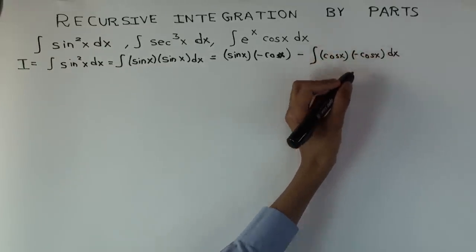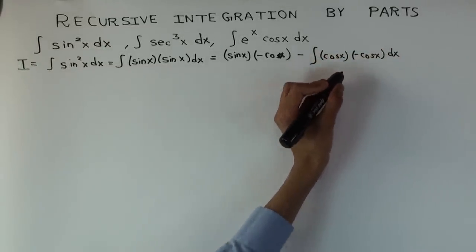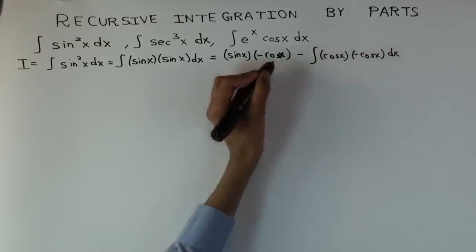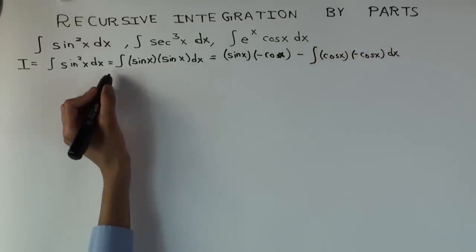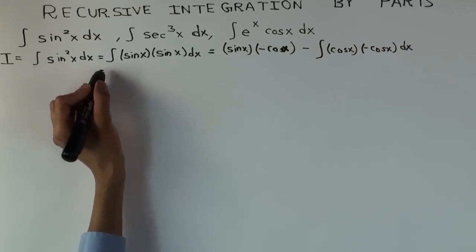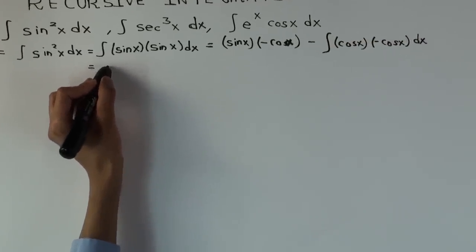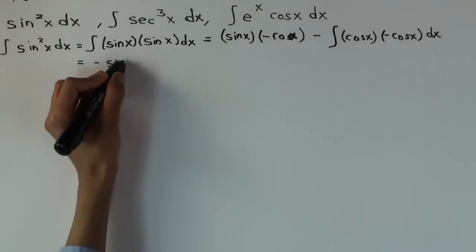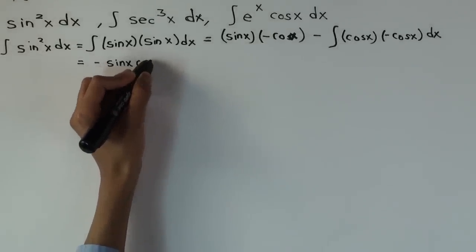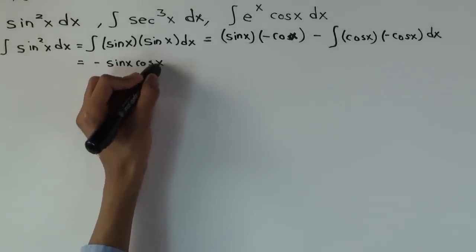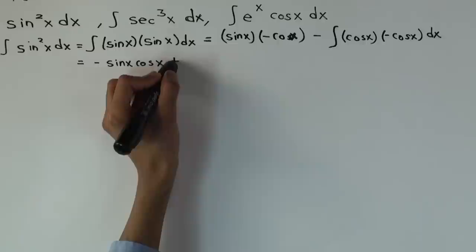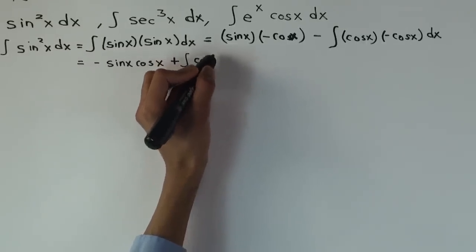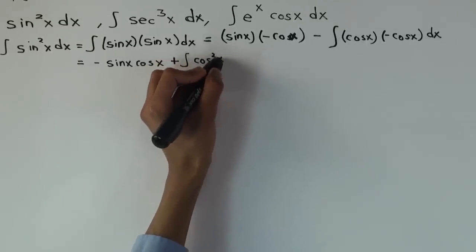Be very careful about the plus and minus signs. This becomes minus sin(x)cos(x) plus the integral of cos²(x) dx.